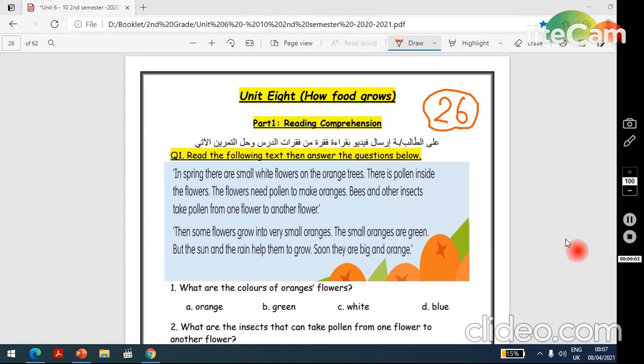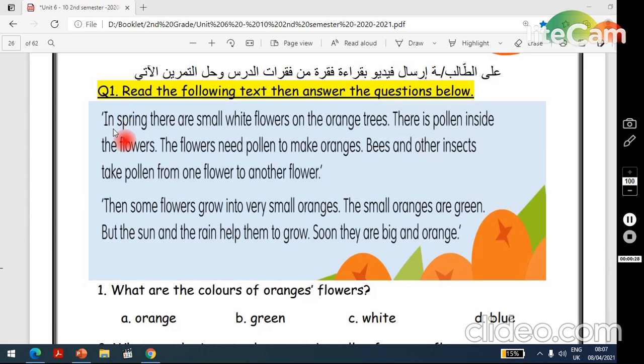Now please open your booklet, page 26. Unit 8, How food grows. Part 1, Reading comprehension. Now question 1, read the following text then answer the questions below. Let's start. In spring, in spring there are small white flowers on the orange trees. There is pollen inside the flowers. The flowers need pollen to make oranges.